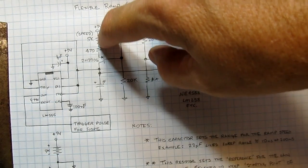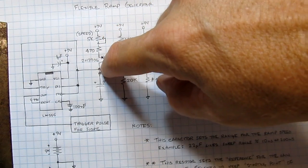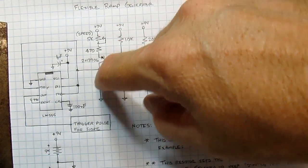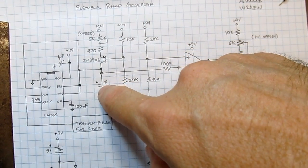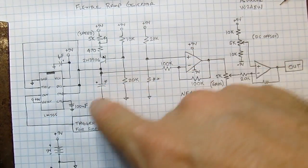And by adjusting this pot, we can adjust the emitter current, which effectively adjusts the collector current. That constant current will essentially charge this capacitor in a linear fashion. That's how we get the ramp.